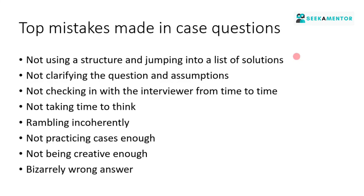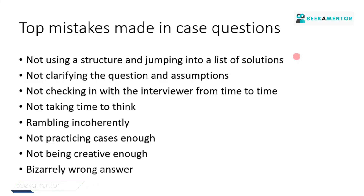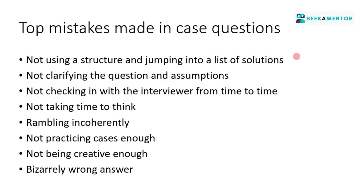The fourth mistake is not taking time to think. At each step you should ideally take two minutes to think — it's very hard to come up with customer segments or pain points off the top of your head. Take time, jot down some points, then talk. Another mistake is rambling incoherently — sometimes candidates have a lot going on in their head but are unable to communicate, resulting in a confusing train of thought. Not practicing cases enough is also a problem — really smart people have lost out simply because they hadn't practiced. And not being creative enough — the only way to address this is to practice and expose yourself to enough products and industries.